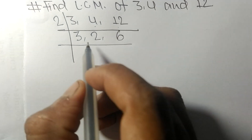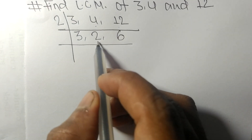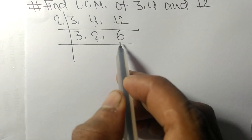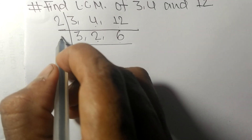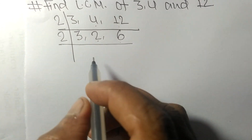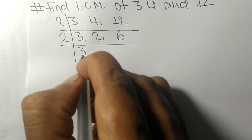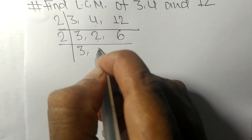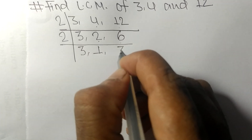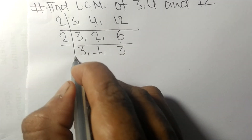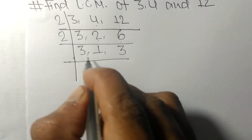Among 3, 2, and 6 — 2 and 6 are exactly divisible by 2; 3 is not divisible so it stays the same. 2 times 1 means 2, and 2 times 3 means 6. So now we have 3, 1, and 3.